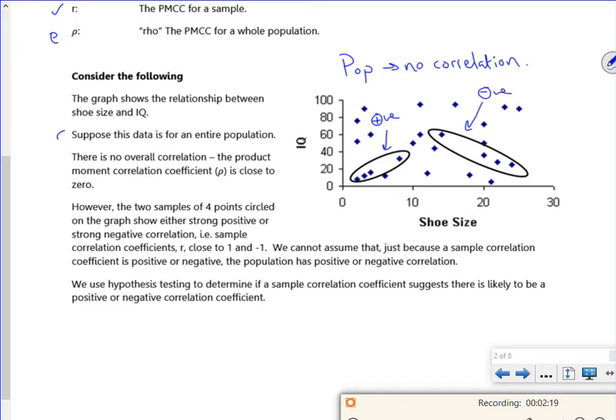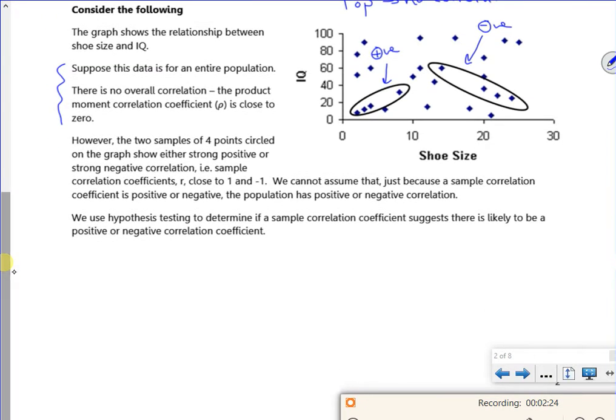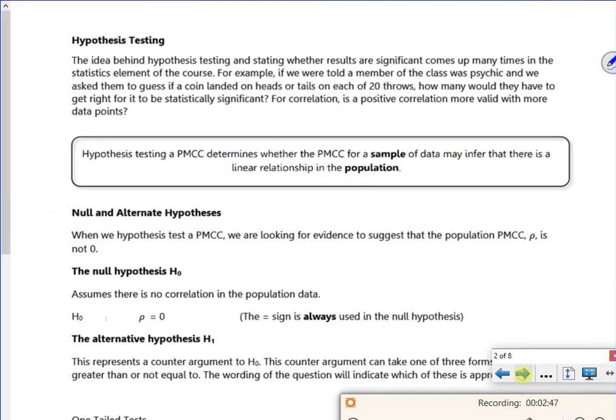Suppose the data for the entire population has got no overall correlation but we take two samples and we've got strong positive and strong negative. So our R values are close to plus or minus one. We don't really know, we're not 100% certain if the sample we've got is representative of the population. So we use hypothesis testing. We have three hypothesis tests on the course. This one's the easiest one to do.